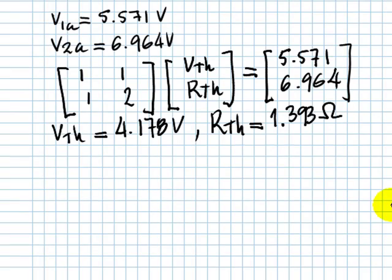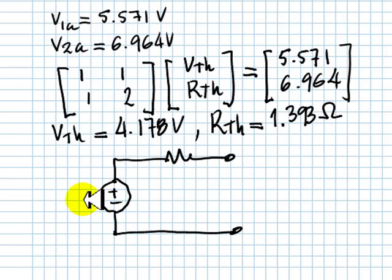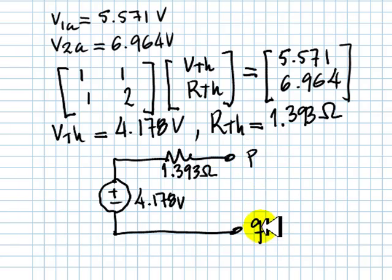We draw the equivalent circuit with the Thévenin voltage source right side up, and whatever value we obtain for that positive or negative ascribed to the source. In this case, it's a positive one, and we say, this is 4.178 volts, and the resistance of the Thévenin is 1.393 ohms, and the port PQ, the circuit is equivalent to the original one.